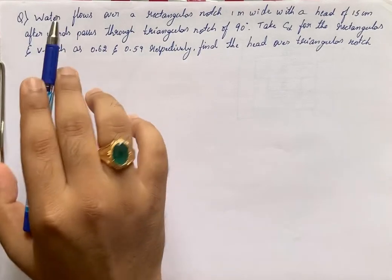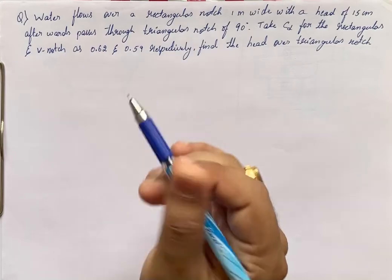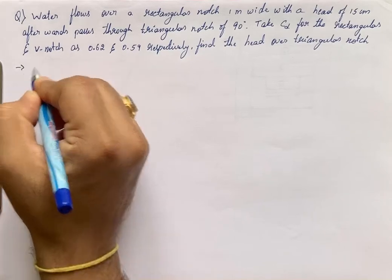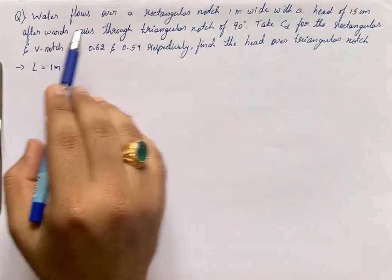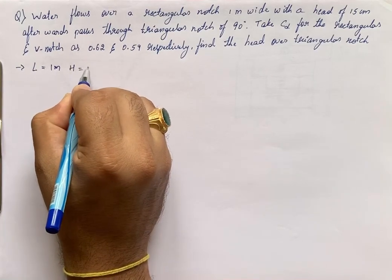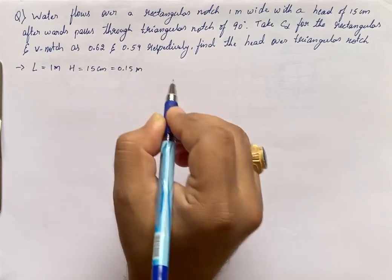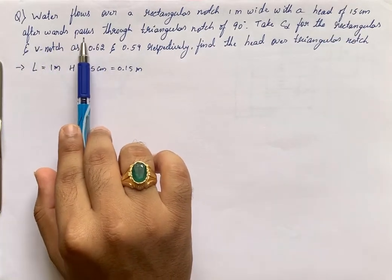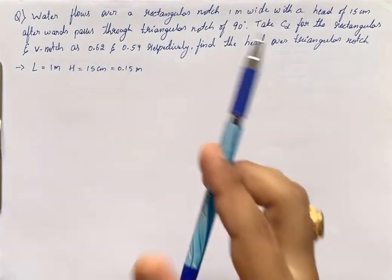In this question, water flows over a rectangular notch of 1 meter wide with a head of 15 centimeter. So width L is 1 meter, and head H is 15 centimeter, which is 0.15 meter. Afterwards the water passes through a triangular notch of 90 degree.